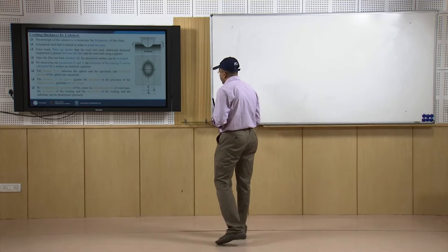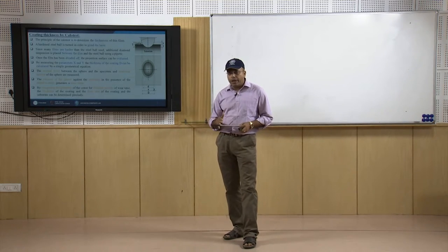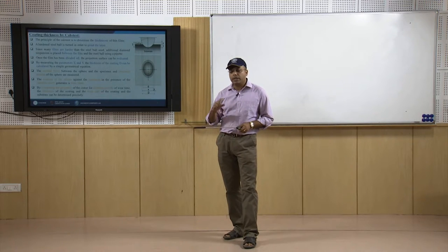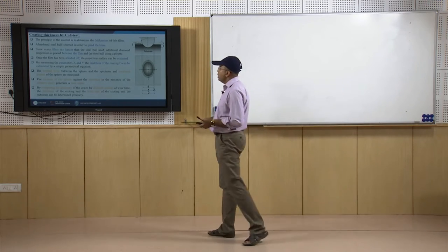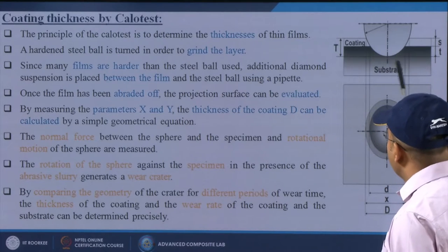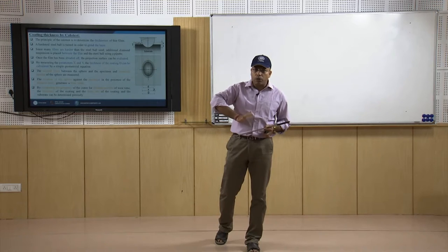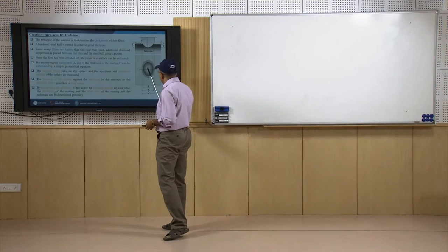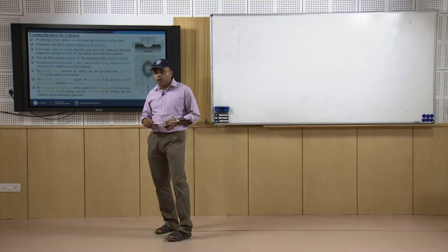Next, we try to measure the coating thickness onto the substrate. We have been discussing different layer formations, but now we measure whether the coating is uniform, how much material is present on the substrate, and whether the thickness is uniform across the surface. The principle of the Calotest is to determine the thickness of thin films: a hardened steel ball is rotated to grind the layer — the ball, like a ball bearing, is placed onto the substrate and rotated under high pressure so it creates an impact on that substrate surface.